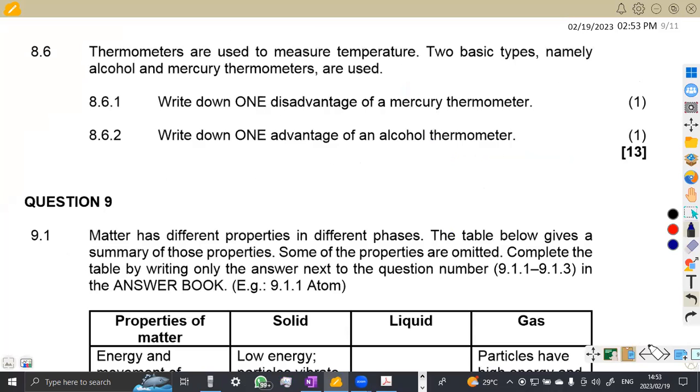On 8.6, thermometers are used to measure temperature. Two basic types, namely alcohol and mercury thermometers are used. Write down one disadvantage of mercury thermometer. The disadvantages can be that it is expensive, mercury is poisonous, there's the issue of evaporation, and also high freezing point. There's so many disadvantages. I want you guys to just list other disadvantages so that others can take from there on the comment section.